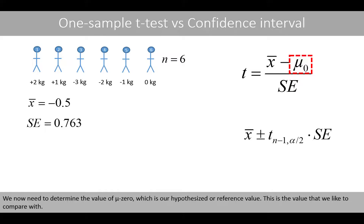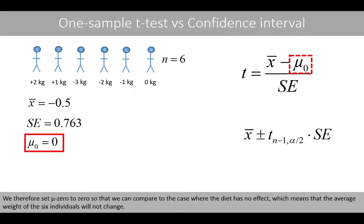We now need to determine the value of mu-zero, which is our hypothesized or reference value — the value that we like to compare with. We therefore set mu-zero to zero so that we can compare to the case where the diet has no effect, meaning that the average weight of the six individuals will not change.